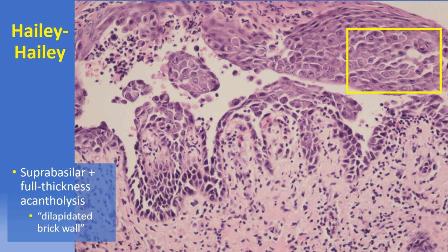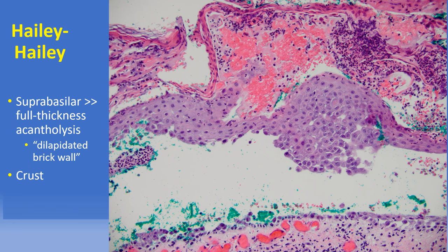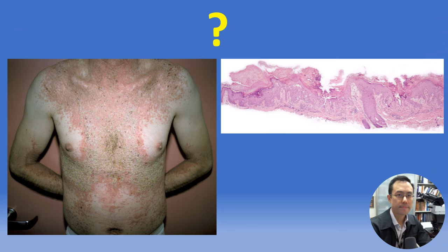Another aspect of Hailey-Hailey disease that can be tricky is that we always use the absence of dyskeratosis to distinguish it from other disorders showing acantholytic dyskeratosis, but in reality limited dyskeratosis can be seen — so we look for minimal to absent dyskeratosis but it's often not zero. Here is another example of clinically and genetically proven Hailey-Hailey disease with characteristic prominent impetiginized crust and mostly a suprabasilar acantholytic cleft.